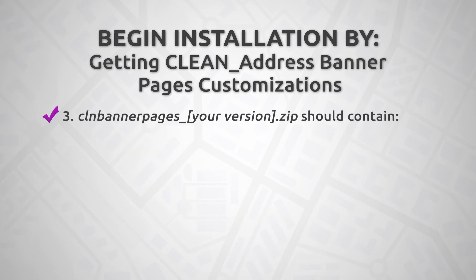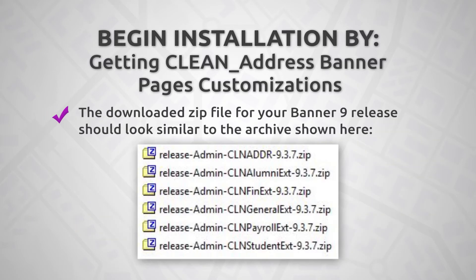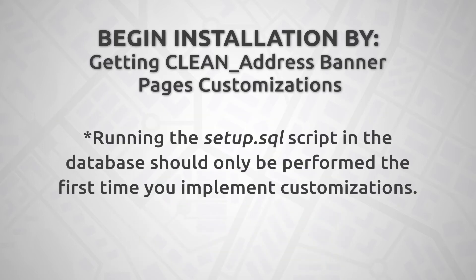Third, the downloaded CLN Banner pages zip file should contain the following files: all setup files and scripts to run on initial install of Clean Address for Banner 9; the installation guide; and a folder containing release-based extensions. The downloaded zip file that corresponds to your release of Banner 9 should look similar to the following archive zip files. The task of running the setup.sql script in the database should only be performed the first time you are implementing customizations.